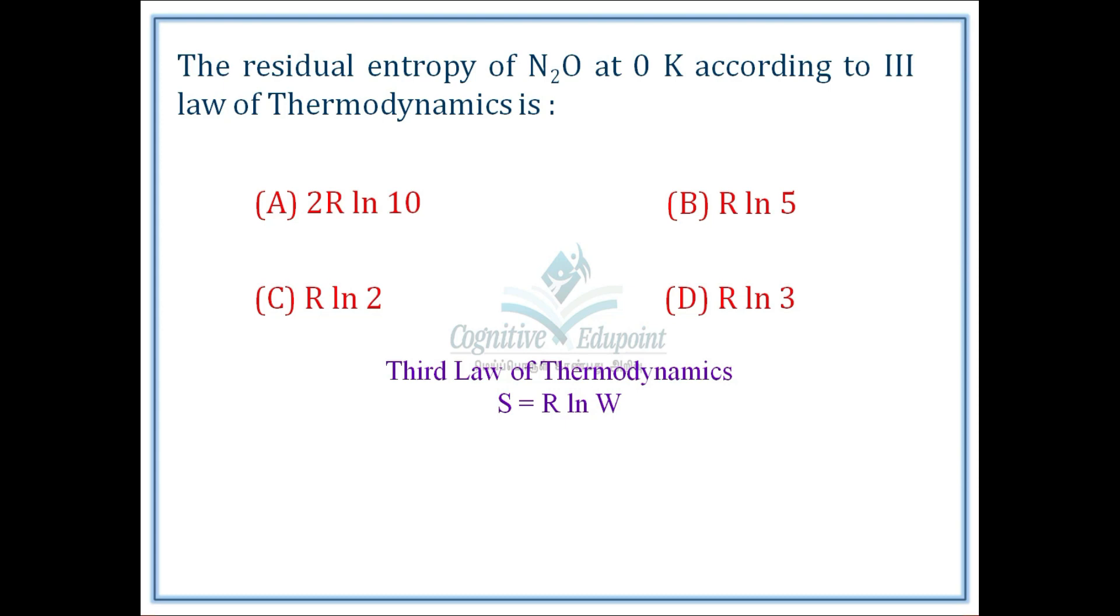One system arrangement probability, we substitute. In the case of N2O, it is 2. Similar molecules, there are different possible arrangements. So, substitute 2 in place of W.